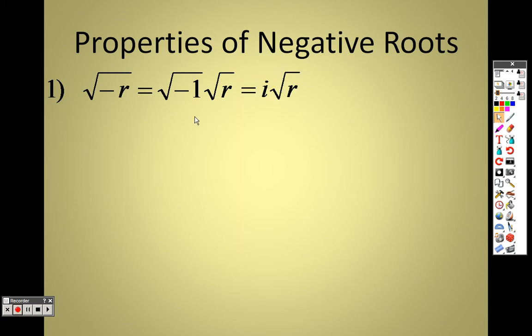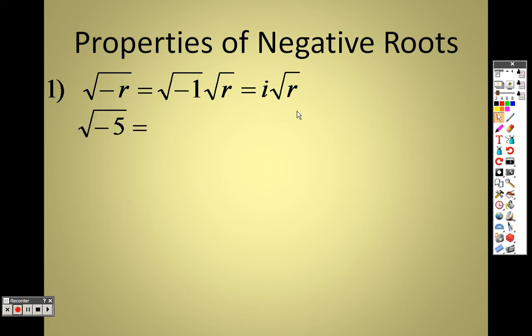The square root of negative 1 is i, so we do that so we can actually solve problems that have negative roots. We take that negative root out and make it an i in order to solve it. So it's actually i times the square root of r.